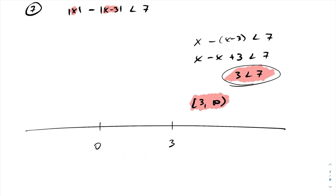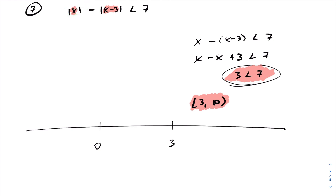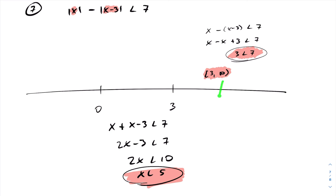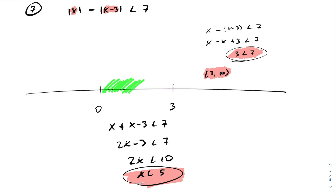Now pick a value between 0 and 3 — let's say 1. This first absolute value input will be positive, so we drop that sign with no cost. The second absolute value input will be negative, so we must add a minus sign. Solving the resulting inequality: 2x minus 3 is less than 7, so 2x is less than 10, and x is less than 5. Within this interval, x is less than 5 contains all values from 0 to 3. So the answer here goes from square bracket 0 to square bracket 3.